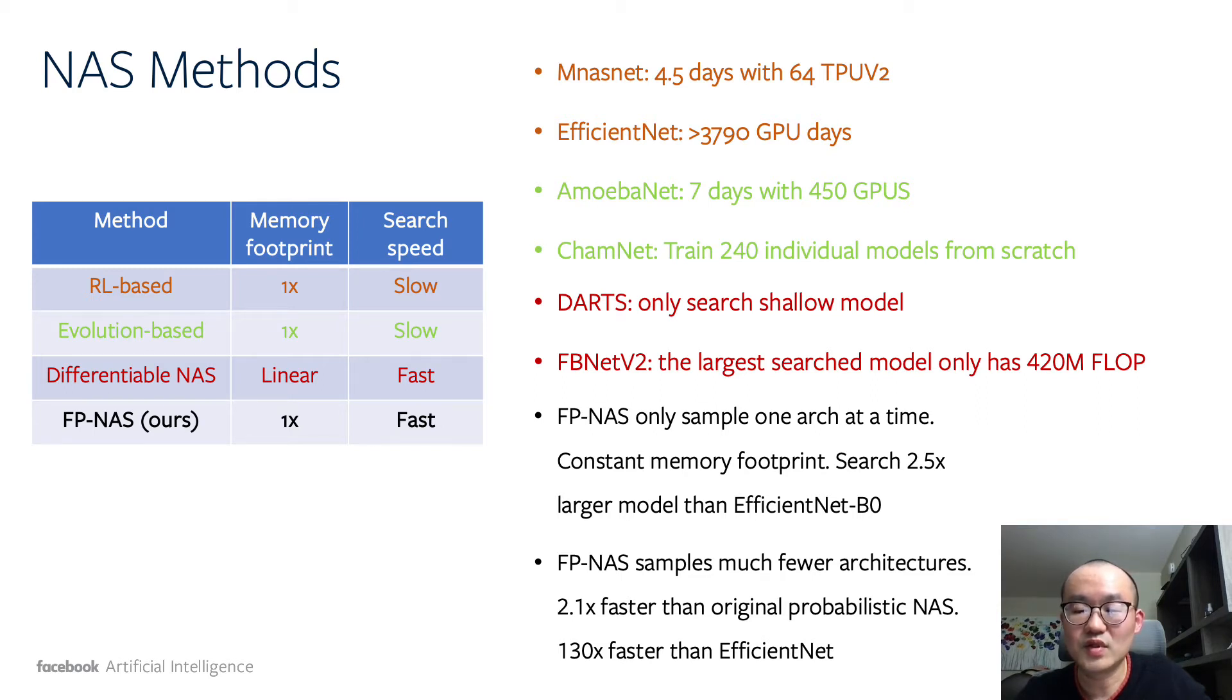Recent differentiable NAS methods, such as DARTS and FBNetV2, share model weights between different architectures to speed up the search. However, they use much larger memory footprint and cannot be used to directly search large models.